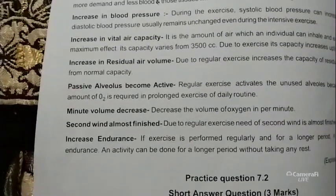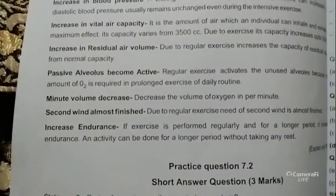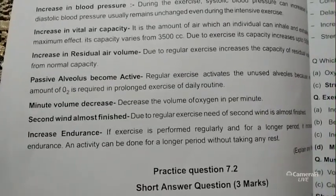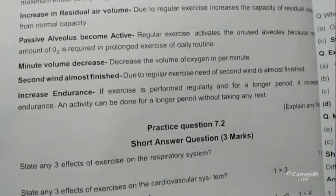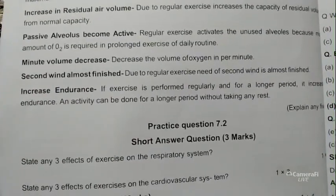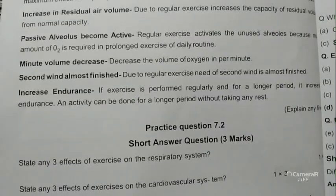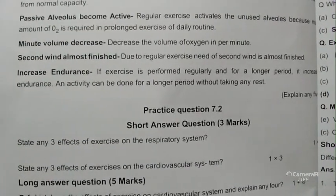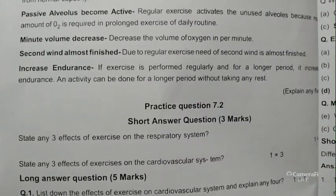Increase in residual air volume: regular exercise increases the capacity of residual volume from the normal capacity. Passive alveoli become active: regular exercise activates unused alveoli because much oxygen is required in prolonged exercise. Minute volume decreases the volume of oxygen consumed per minute. Second wind is almost finished due to regular exercise. Increase in endurance: if exercise is performed regularly and for a longer period, it increases endurance and activity can be done for longer without rest.